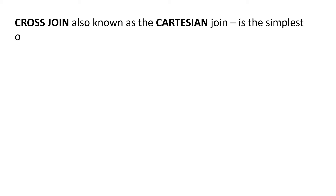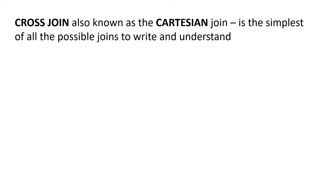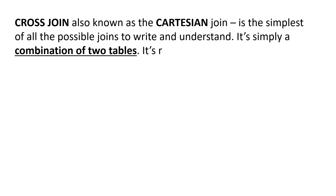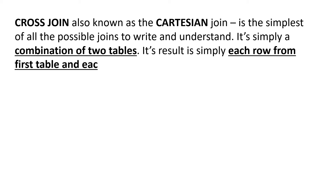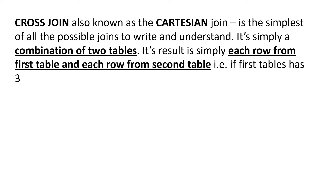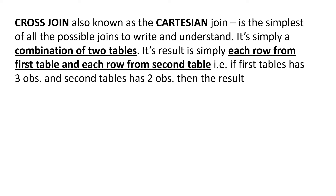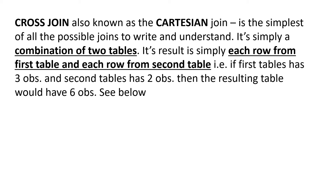Cross join, also known as the Cartesian join, is the simplest of all possible joins to write and understand. It is simply a combination of two tables — its result is each row from the first table combined with each row from the second table. So if the first table has three observations and the second table has two observations, the resulting table would have six observations.